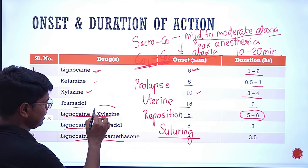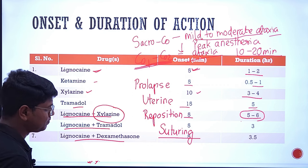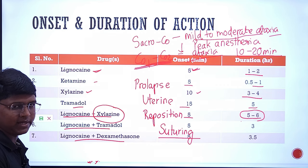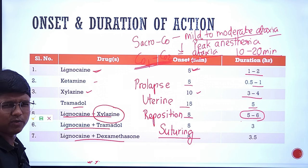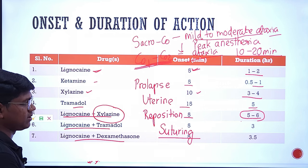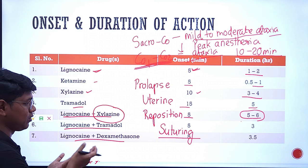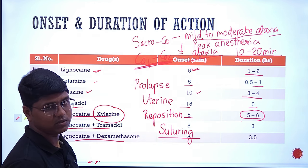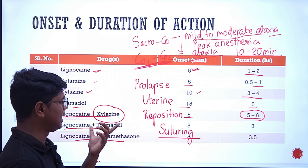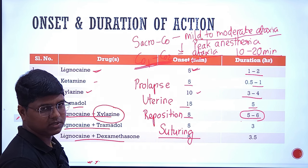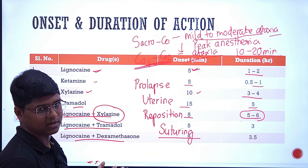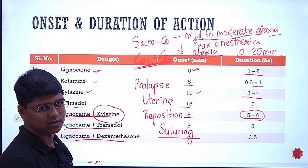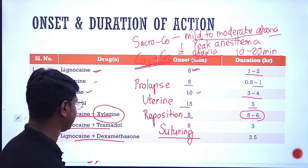When you are using alpha-2 agonists like xylazine, you may find some degree of sedation. Don't need to worry — it is not that profound sedation caused by xylazine normally. When used epidurally, the dose rate is very low at 0.03 mg/kg, and you may not find significant systemic effects. You may find some degree of sedation, which may actually be a good thing when the animal is in pain.